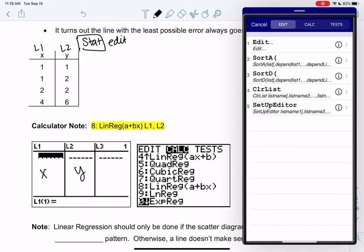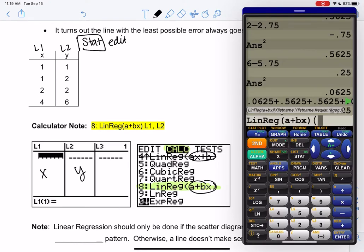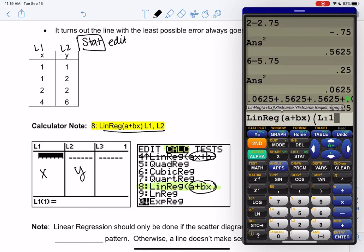Then you're going to go to stat, over to calculate. You might see linear regression as number 4 on yours. The numbers are slightly different on mine. But on your calculator, it's probably number 8. We're actually going to skip 4 because it's the opposite order and jump down to 8. You'll notice the only difference is the order ax plus b or a plus bx. We're writing everything in that second order. So go down to 8. Then it's going to look like this on your calculator, L1 comma L2. Enter.